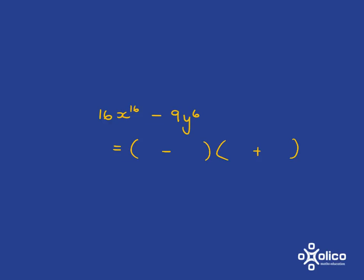And to figure that out, we know we've got to take the square root. So basically, what we're asking ourselves here is, to find out what goes here, I need to know what multiplied by itself will give me 16x to the 16.